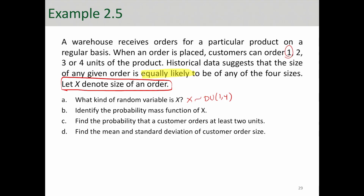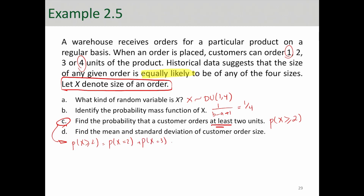The starting point is 1 and the ending point is 4. The PMF is 1 over (b − a + 1) = 1/4. To find the probability that a customer orders at least 2 units — that is P(X ≥ 2) — we sum P(X=2) + P(X=3) + P(X=4) = 1/4 + 1/4 + 1/4 = 3/4. The probability of each value is 1/4, so the summation is 3/4.